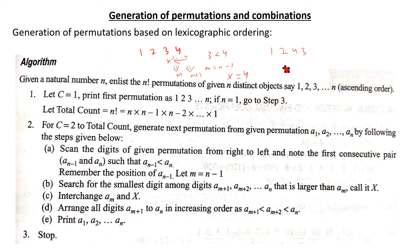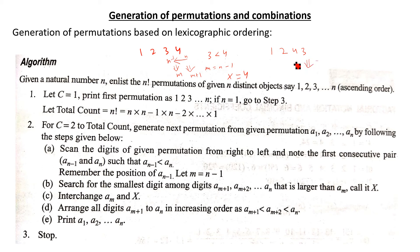Arrange all digits from position a_{m+1} onward in increasing order: a_{m+1} < a_{m+2} < ... < a_n. We don't have any further digits here, so print a1, a2, up to n. The next permutation after 1, 2, 3, 4 is 1, 2, 4, 3.